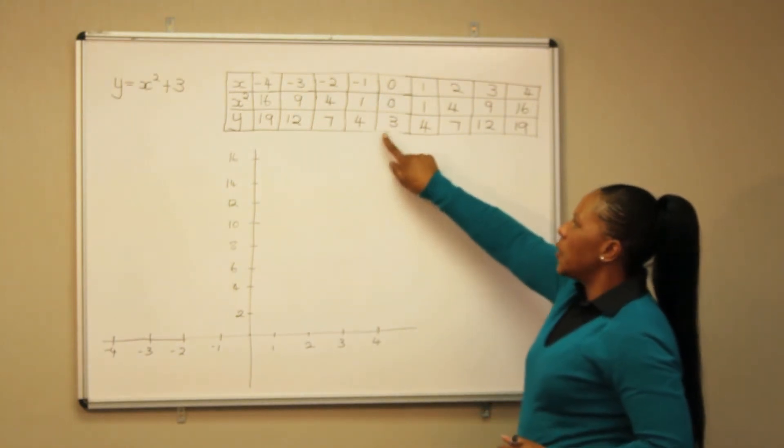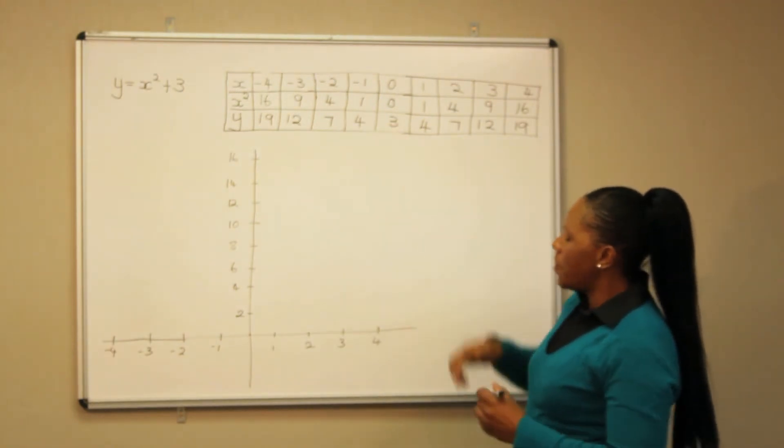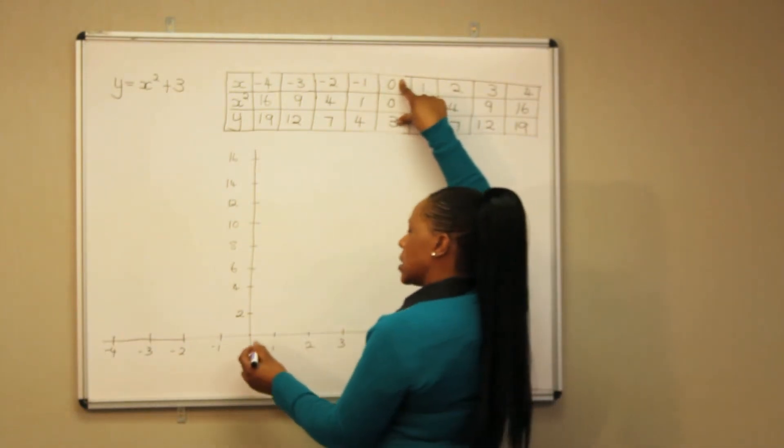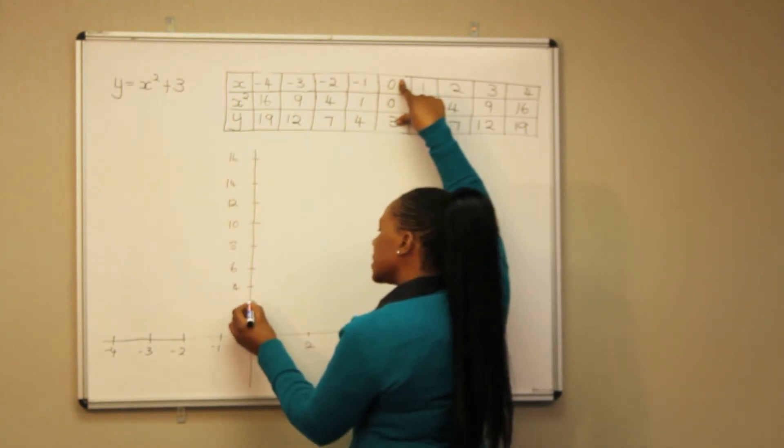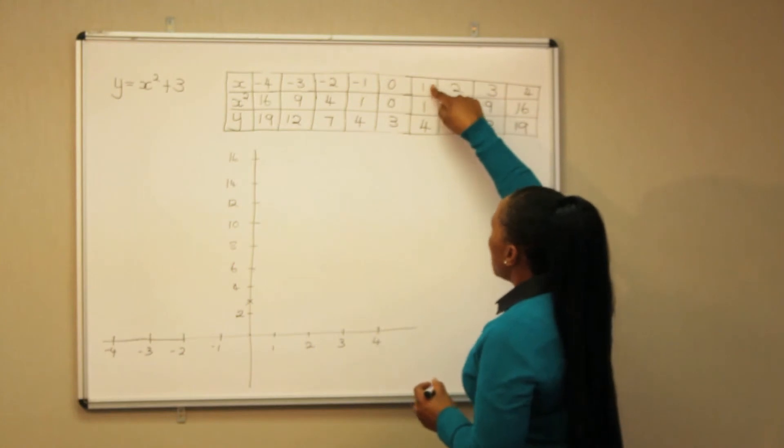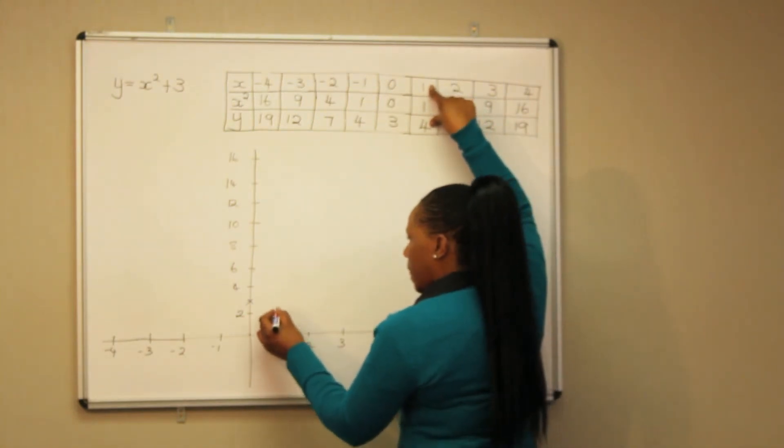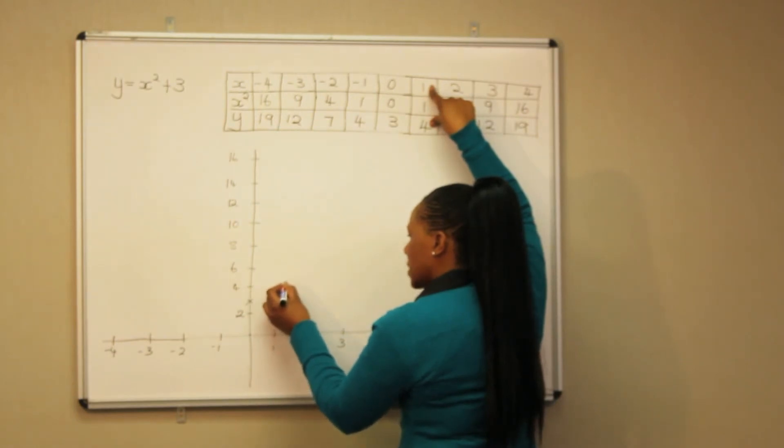So we are going to plot our graph from that point. So our x is 0 and our y is 3. Then when our x is 1 our y is 4. So that's the next point.